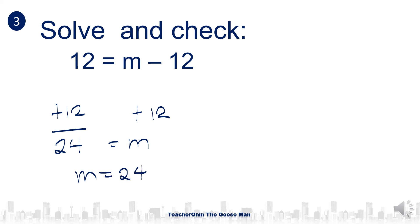Now to check this, 12 equals m minus 12. Substitute the value of m, which is equal to 24. So 12 equals 24 minus 12. Is it the same? 12 equals 12. Therefore, the value of m is equal to 24.